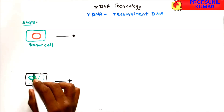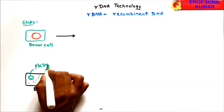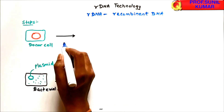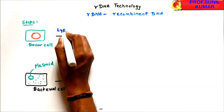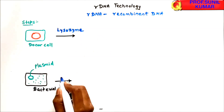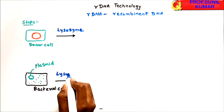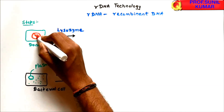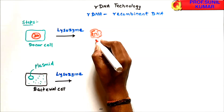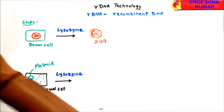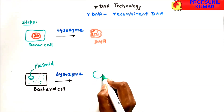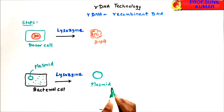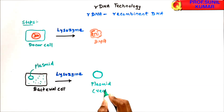The bacterial cell is carrying a plasmid, which is going to be used as a vector. Both the donor cell and the bacterial cell are treated with one enzyme called lysozyme. When you treat them with lysozyme, the cells break open and all the genetic material is released — the DNA from the donor cell and the plasmid from the bacterial cell.